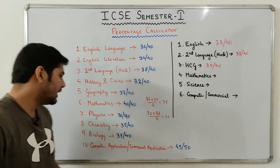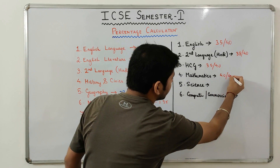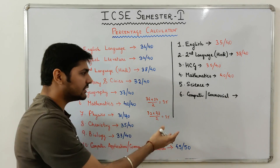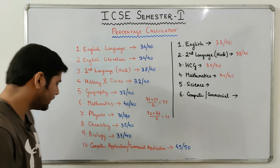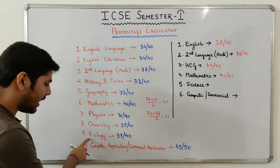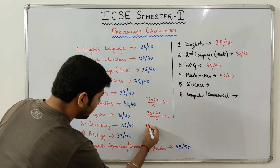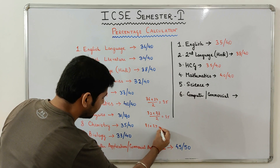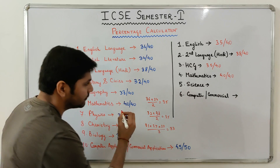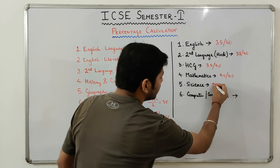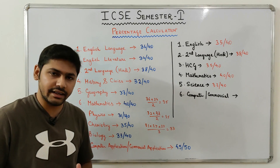Coming to the next subject, Mathematics — this is a single subject, so you have 40 out of 40. Then Science, which is a combination of three subjects: Physics, Chemistry, and Biology. So we calculate the average: 31 plus 35 plus 33 divided by 3 equals 33. So for Science you have 33 out of 40.